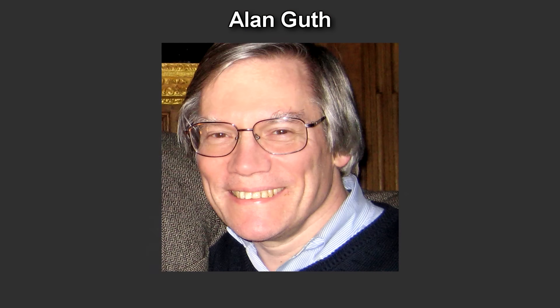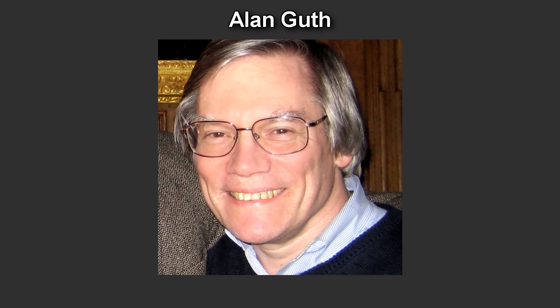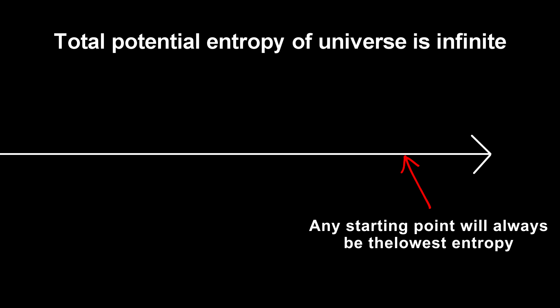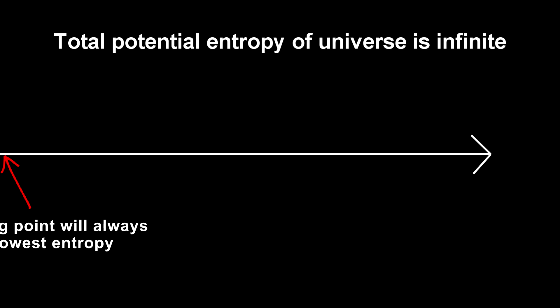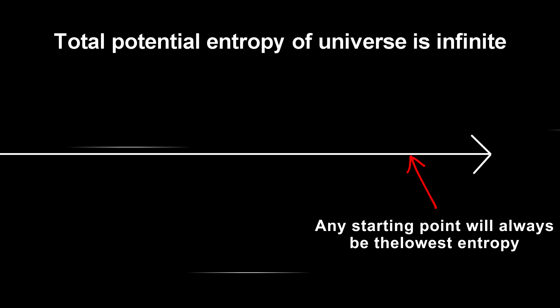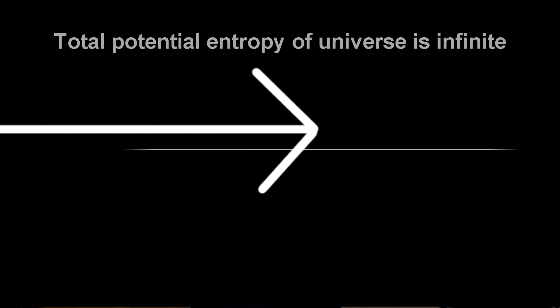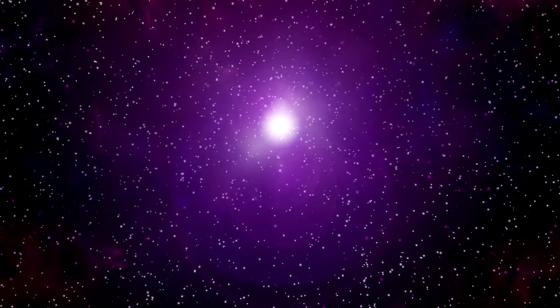Again, Alan Guth may have an answer to this. He says that if the universe is infinitely large, then the total potential entropy of the universe is infinite. If that is the case, then any entropy you start with is low entropy because there is always the possibility of increasing. The entropy will increase from any given starting point, he says. This means that it doesn't matter what the entropy of the Big Bang was. It would always be the lowest entropy because there will always be a larger entropy number that the universe can flow to.